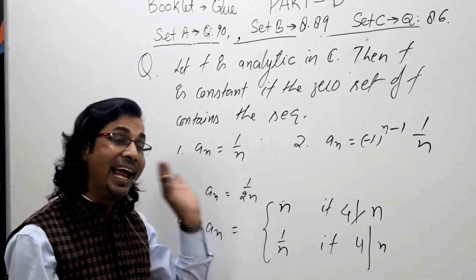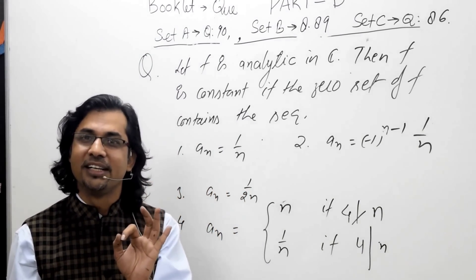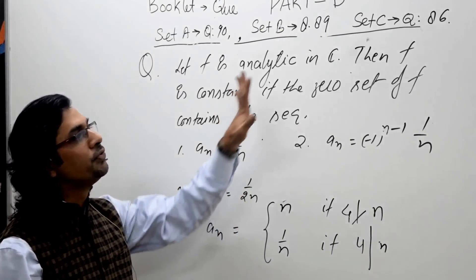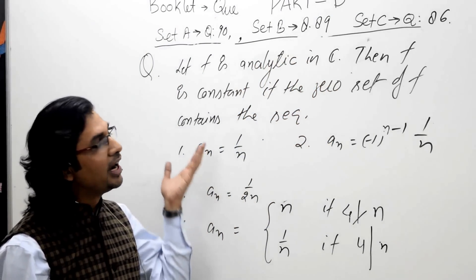So if we can find any subsequence which is convergent, we can easily claim the function is identically 0 and hence constant.